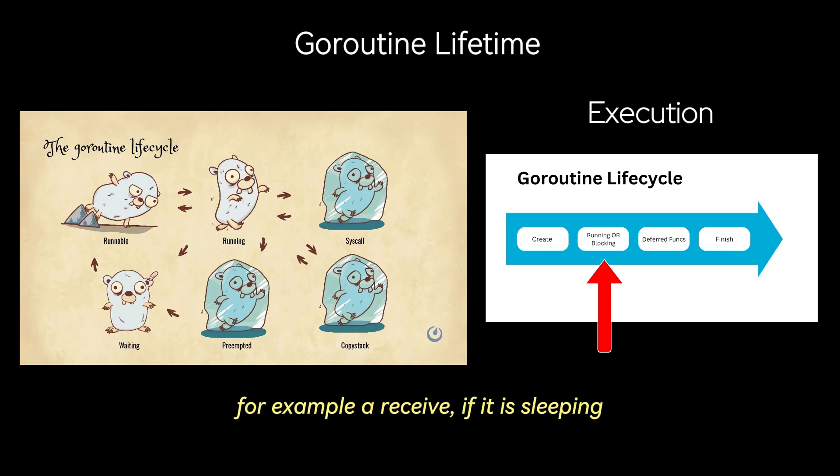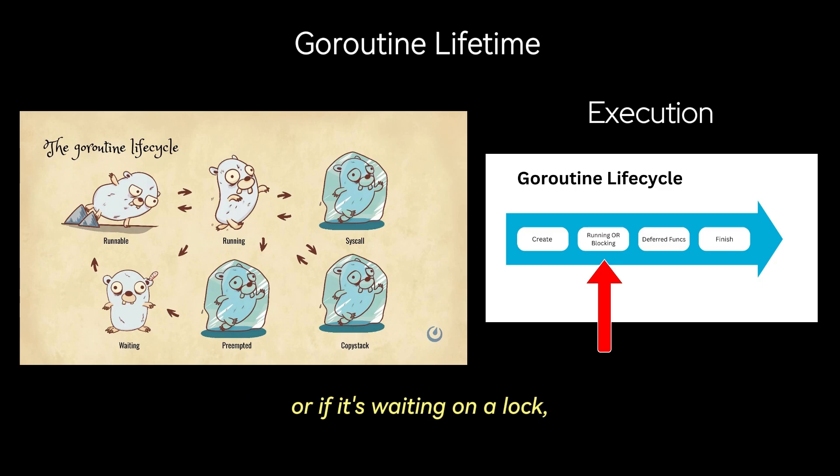A goroutine may also block if it is sleeping — for example, time.Sleep — or if it's waiting on a lock, for example sync.Mutex or sync.WaitGroup.